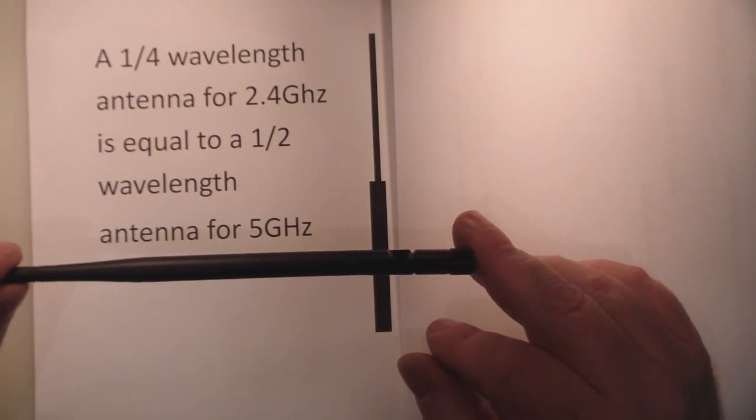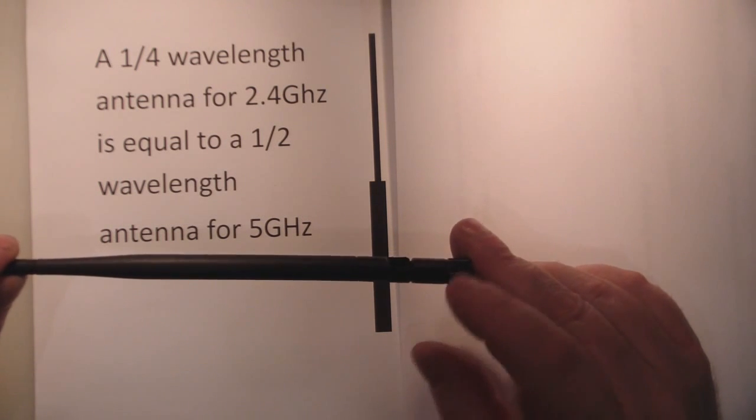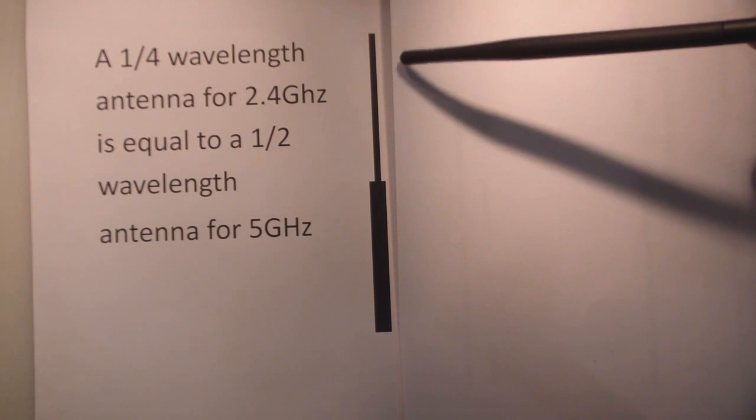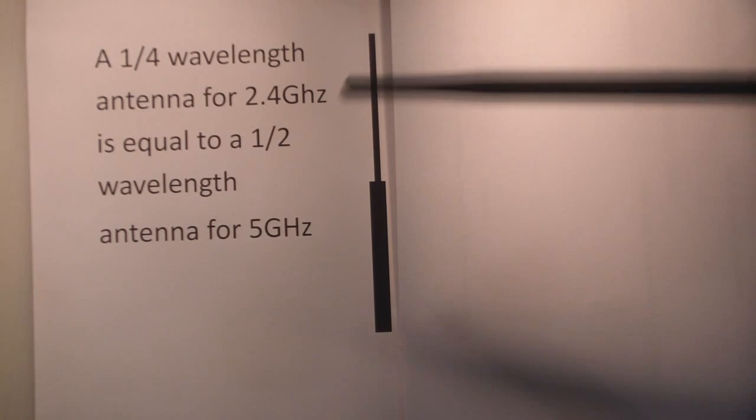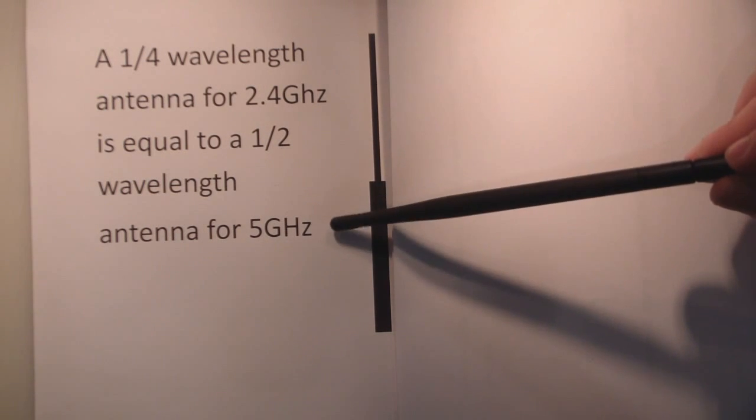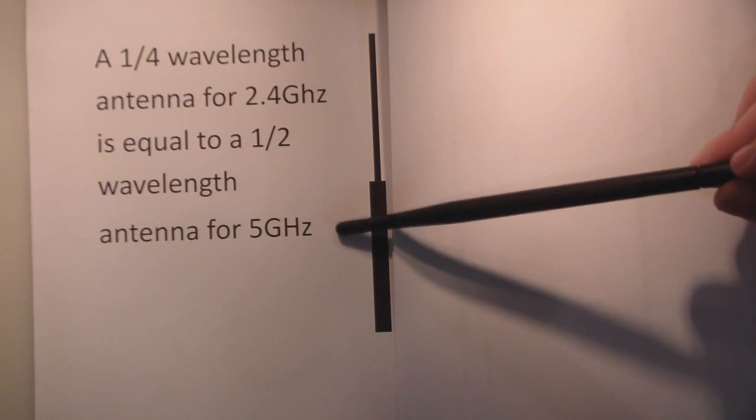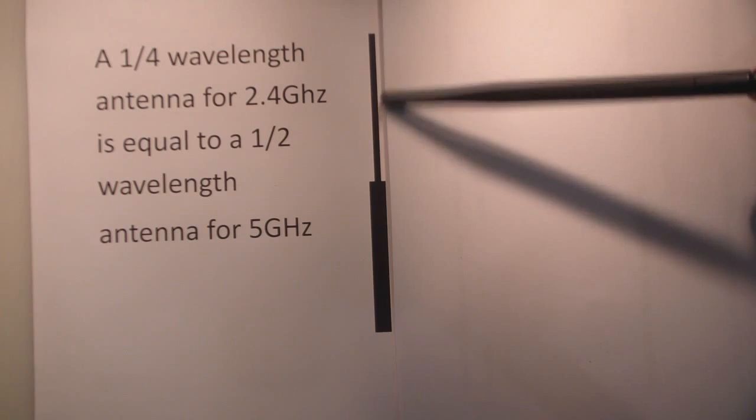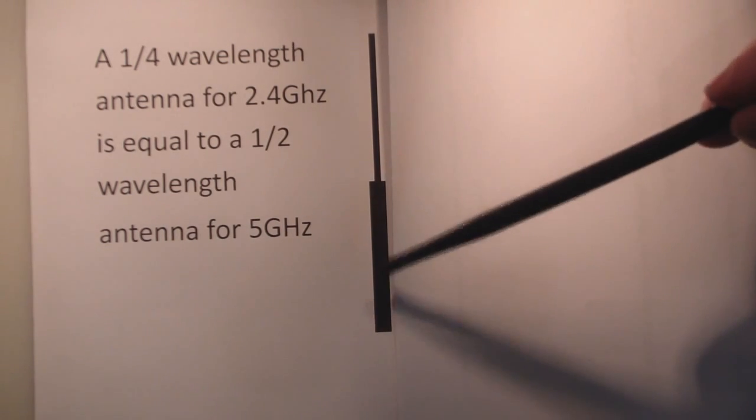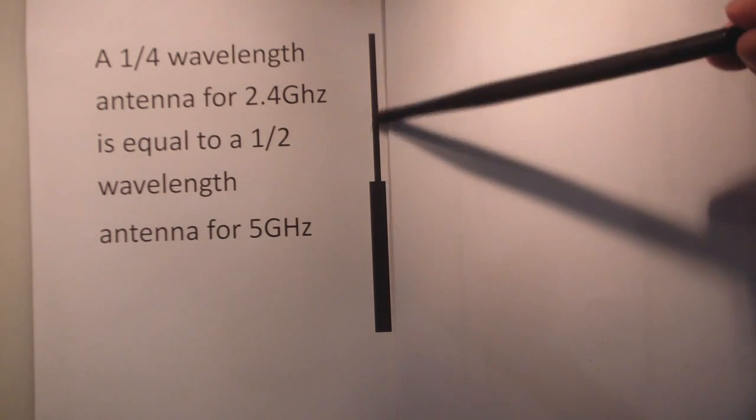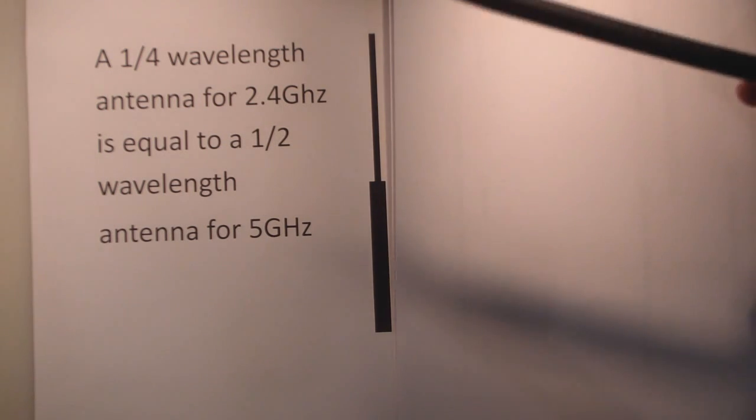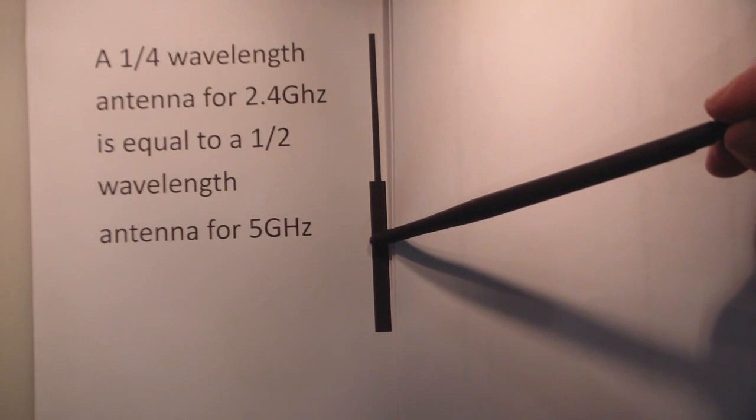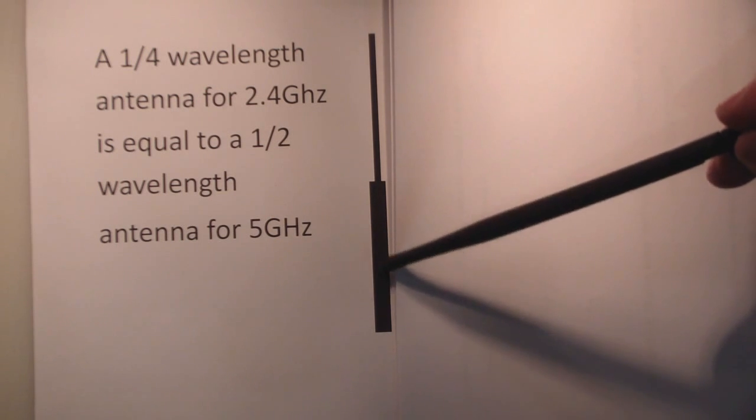So why have I got a 2.4GHz antenna with my dual channel USB card? The reason for this is manufacturers want to save money. What the manufacturers say is that a quarter wavelength antenna for the 2.4GHz spectrum is equal to a half wavelength antenna for the 5GHz spectrum. So they are saying that the 5GHz is half of the 2.4GHz in wavelength. And here I have got a rough outline of a dipole antenna. You've got a quarter wavelength here on the 2.4GHz and a quarter wavelength here, add them both together you get a half wavelength antenna for the 2.4GHz spectrum.